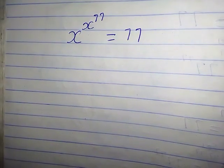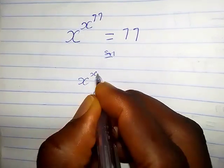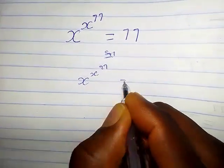Hello, how do we solve this nested exponent? Solution. So we have x raised by x raised by 77 equals 77.